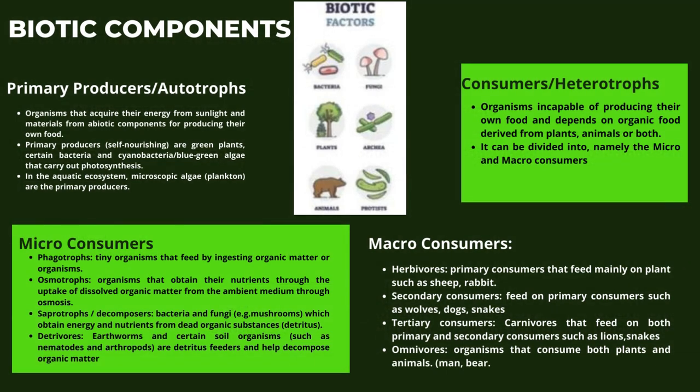Let us look in detail about the biotic components, starting with primary producers, also known as autotrophs. These are organisms that acquire their energy from sunlight and materials from abiotic components for producing their own food. Primary producers, which are self-nourishing, are green plants, certain bacteria, and cyanobacteria — blue-green algae — that carry out photosynthesis. In the aquatic ecosystem, microscopic algae and plankton are the primary producers.